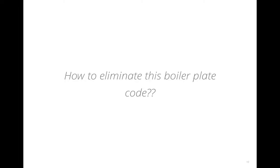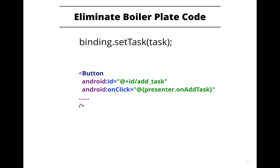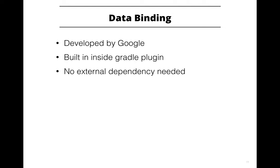What if there was a binding object that knows about all your views and you don't even need to typecast them? You don't have to do findViewById at all. Even better, you can set your model in the binding object and it will take care of setting the values on your views. The data binding library will create this binding object for you, and for event handling in your layout you can just say onClick presenter.onAddTask — no extra boilerplate code, no setClickListener, nothing.